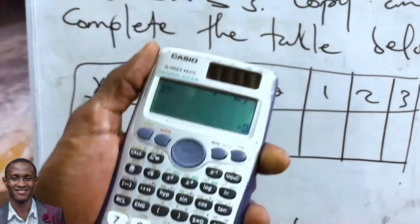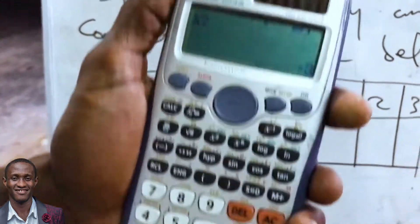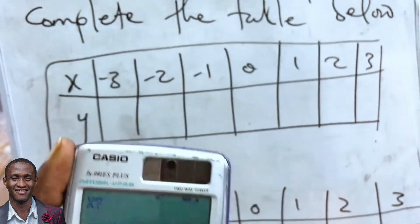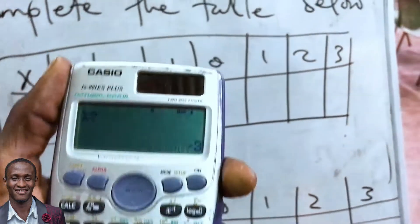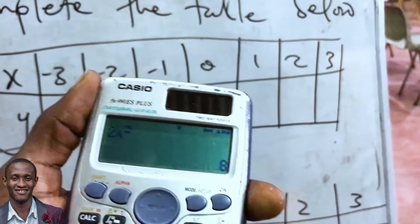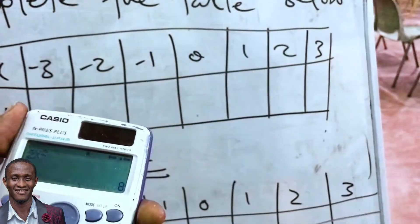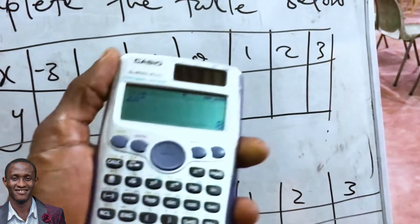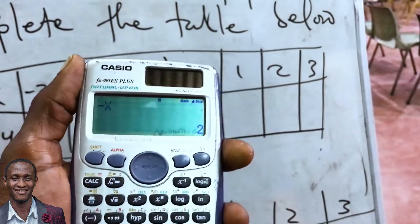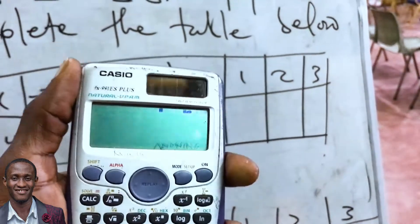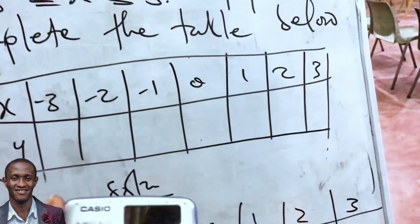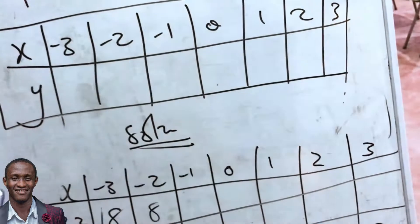Press equals again and it asks for x. Now input the second value, x = -2. Press equals: the first entry gives 8. Press equals again: the second gives 2. Press equals again: the full equation gives 13.